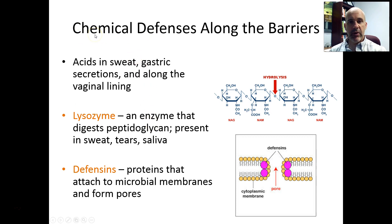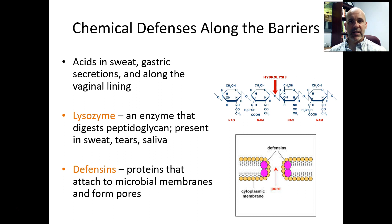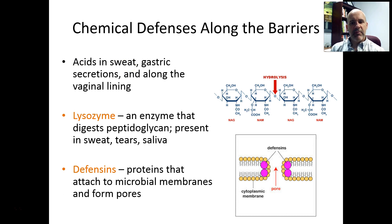Along your barriers, you have some chemical defenses, many of which are proteins. You have acidic compounds in your sweat, stomach secretions, and along the vaginal lining. The acids along the vaginal lining are made by commensal or mutualistic bacteria that do fermentation, releasing acids that lower the pH and prevent many pathogens from growing. Similarly, sweat releases acids onto the skin surface, lowering the pH so that many pathogens that might cause skin infections don't grow very well.